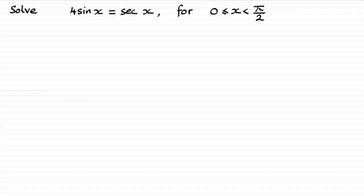For this question, we've got to solve this trigonometric equation: 4 sine x equals sec x, where x is measured in radians. We've got to give the answer in the range where x is greater than or equal to 0, but less than pi upon 2 radians.